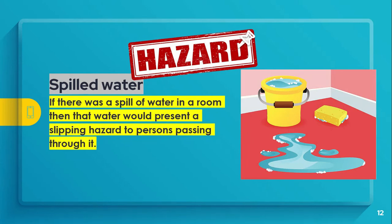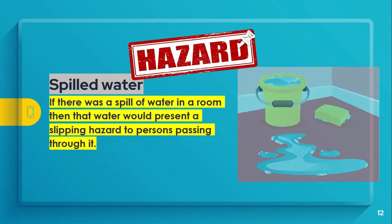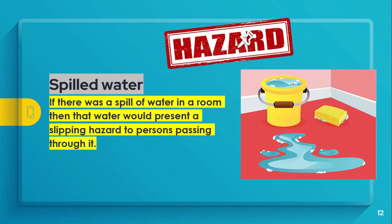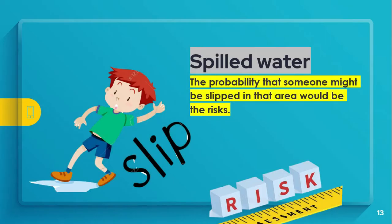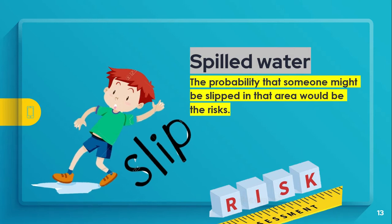Another example for hazard is spilled water. If there was spilled water in a room, then that water would present a slipping hazard to persons passing through it. The probability that someone might slip in that area would be the risk.